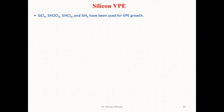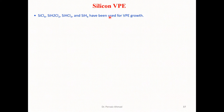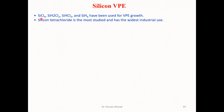Now let's consider silicon vapor phase epitaxy. We can utilize silicon-based compounds — the first, second, third, and fourth ones listed are the most commonly utilized. Among all these compounds, silicon tetrachloride is the most studied and has the widest industrial use.